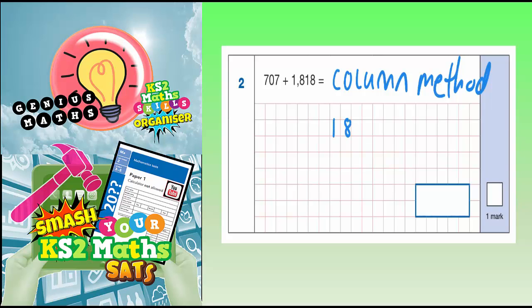So here we go. 1,818 add 707. And if you take your time with this one, there's no reason why you won't get it right.